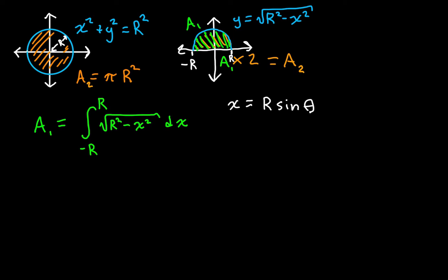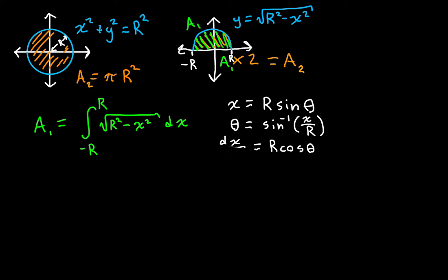There are a couple of new things I also want to say. Theta is going to be equal to the arcsine of x over r — that's an equivalent statement. And lastly, dx/dθ, the derivative of x with respect to theta, is equal to r times the cosine of theta. Or, from trig substitution, another correct way you can write this: dx is going to be r cosine of theta dθ — you can think of it like multiplying both sides by dθ.